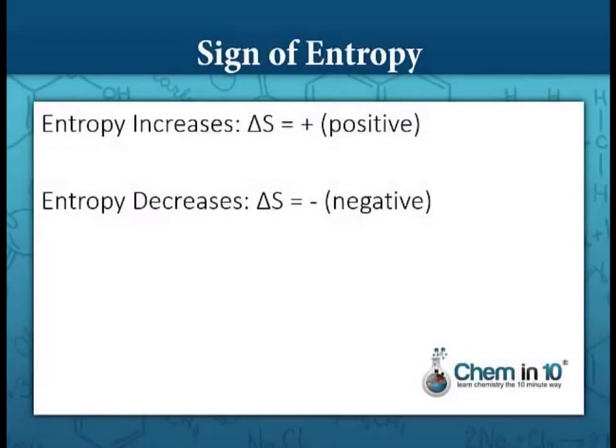When entropy increases, delta S would be positive, because delta S is final entropy minus initial entropy. If final entropy is greater than initial entropy, it's going to be positive. If entropy decreases, we say that delta S is negative — final entropy minus initial entropy is negative.